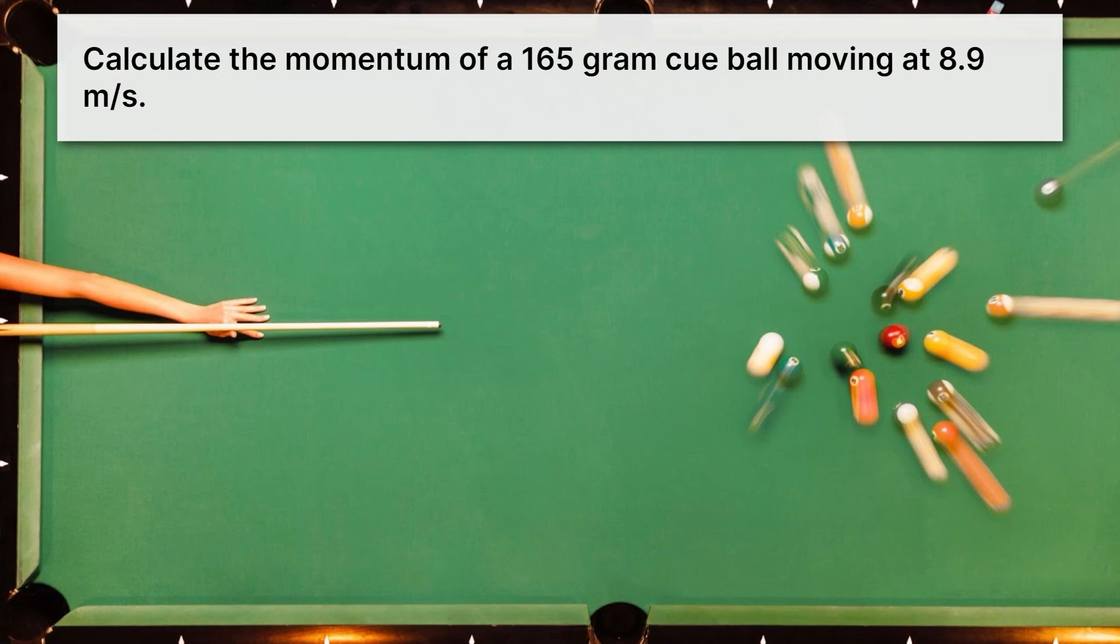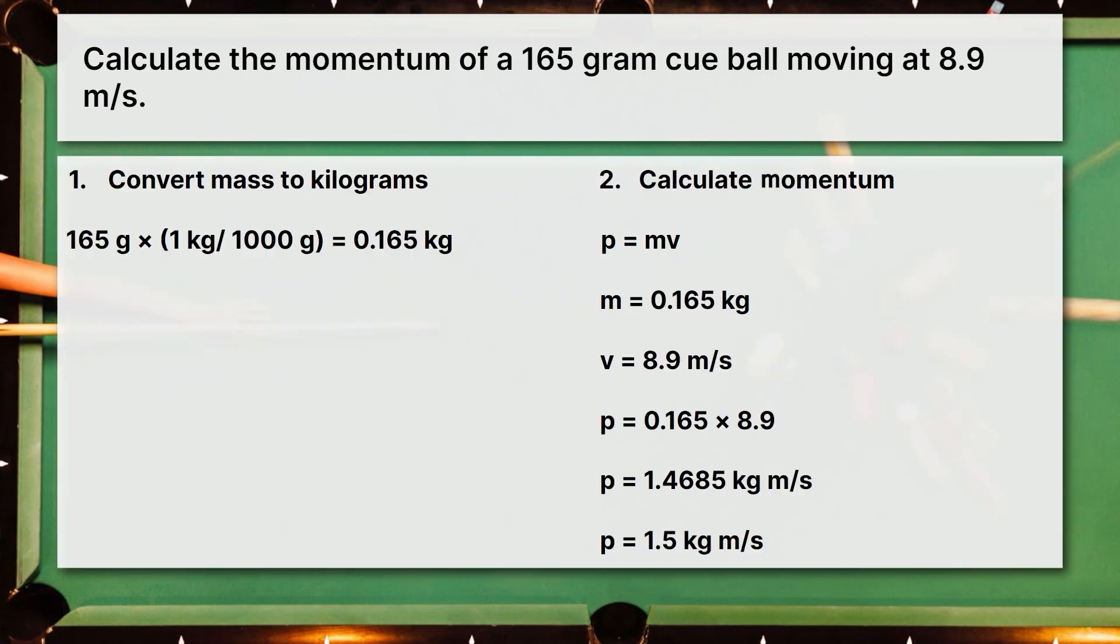Okay, let's take a look at the full solution. We followed two steps, once again, converting mass to kilograms, where we got 0.165 kilograms for the mass of our cue ball. And then we calculated momentum by multiplying mass times velocity, and we get that p, which is our weird variable for momentum, is 1.5 kilograms meters per second. If you didn't get that, go ahead and pause the video and look through each step and find your mistake, and then try again. I know you can get this. It may take some practice.